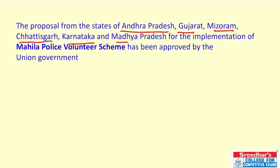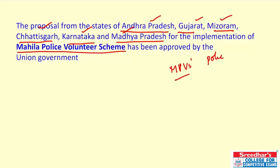Andhra Pradesh, Gujarat, Mizoram, Chhattisgarh, Karnataka, and Madhya Pradesh have all approved the Mahila Police Volunteer scheme. This scheme has been approved by the union government on proposals from these states. Under this scheme, Mahila Police Volunteers will be engaged as a link between the police and the community, helping women in distress — one per gram panchayat across the country.